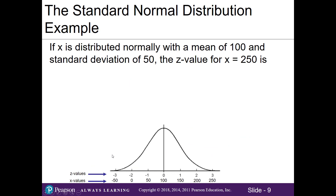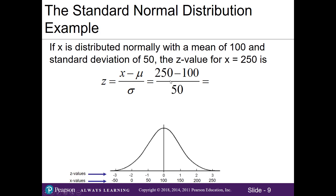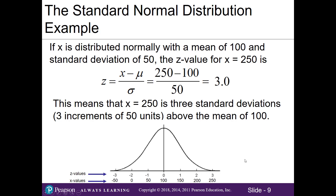For our standard normal distribution, here's an example: x is distributed normally with a mean of 100 and a standard deviation of 50. What is the z value if our x is 250? We plug in 250 minus 100 for our mean, divided by our standard deviation of 50, and we get 3. In other words, 250 is 3 standard deviations — or 3 increments of 50 units — above the mean of 100.